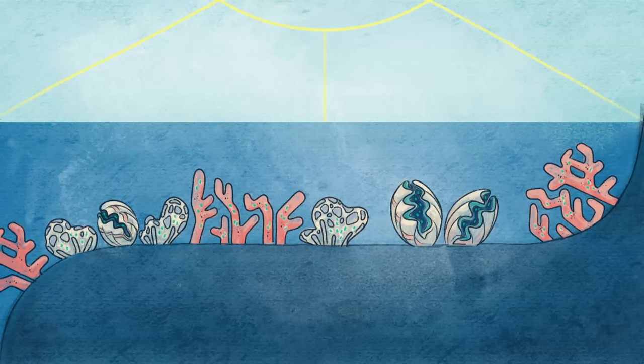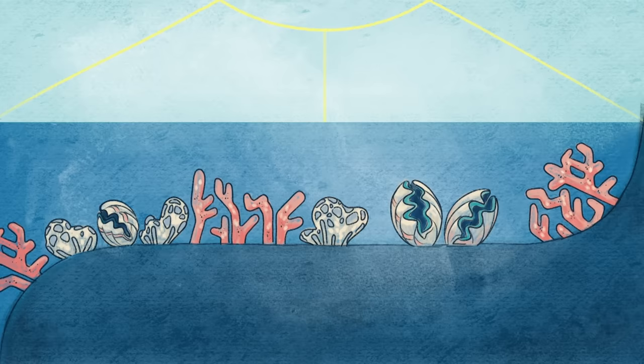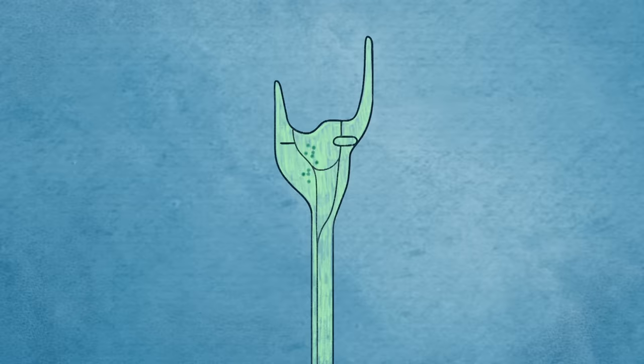Without the aid of these algae, filter-feeding corals, clams, and sponges would not gain enough nutrition in the nutrient-poor tropical ocean, and the dazzling coral reefs they build simply would not exist.